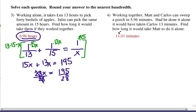Number 4, here's our answer and here's how you get it. Working together, Matt and Carlos can sweep a porch in 5.96 minutes. That's going to be the right side of the equation, 1 over 5.96. That is how long it takes them together.